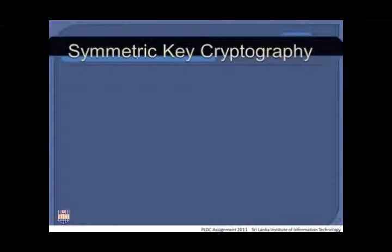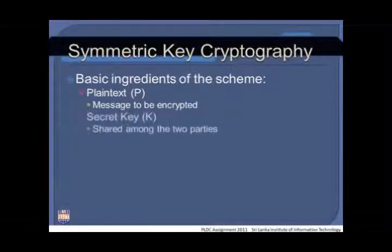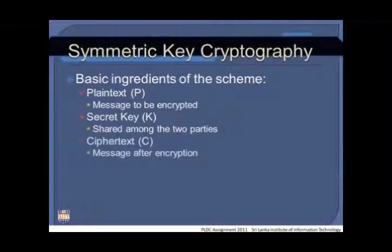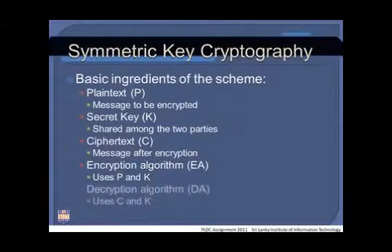The basic ingredients of symmetric key cryptography are: plain text — the actual message to be encrypted; secret key — the key shared between the two parties, used for both encryption and decryption; ciphertext — the message after being encrypted; encryption algorithm — which uses the plain text and the secret key to encrypt the message; and decryption algorithm — which uses the ciphertext and the secret key to decrypt the message.